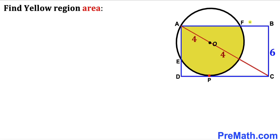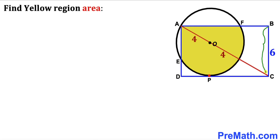In this video we have got a rectangle ABCD and a circle with center O put together such that the diagonal of this rectangle and the diameter of this circle overlap each other, and P is the point of tangency. The radius of this circle is 4 units whereas side length BC of the rectangle is 6.